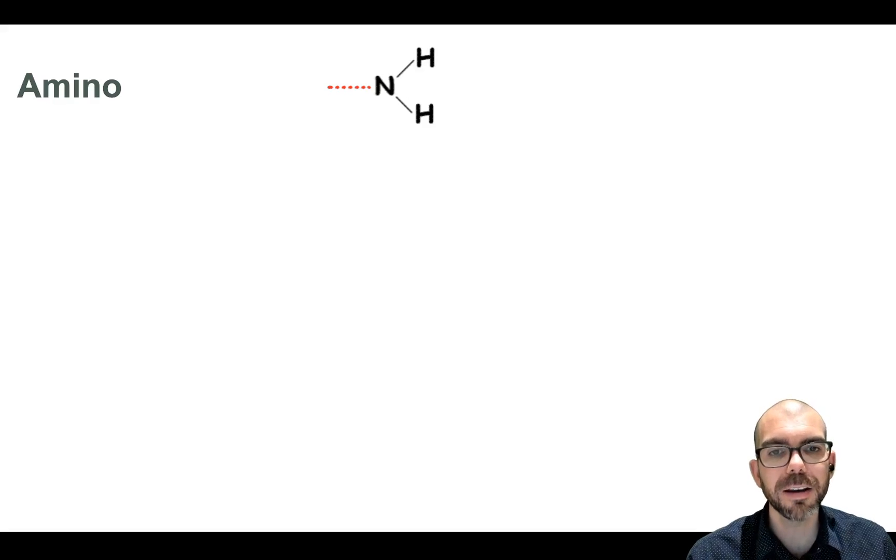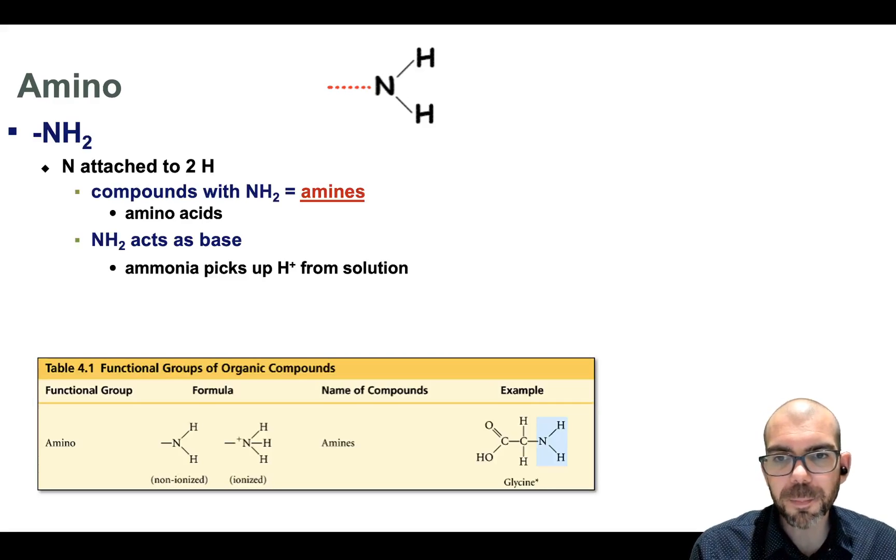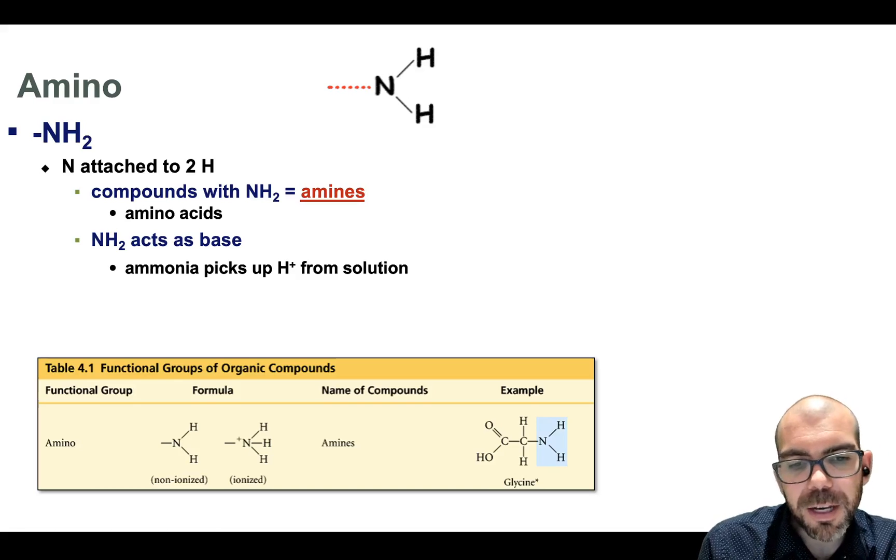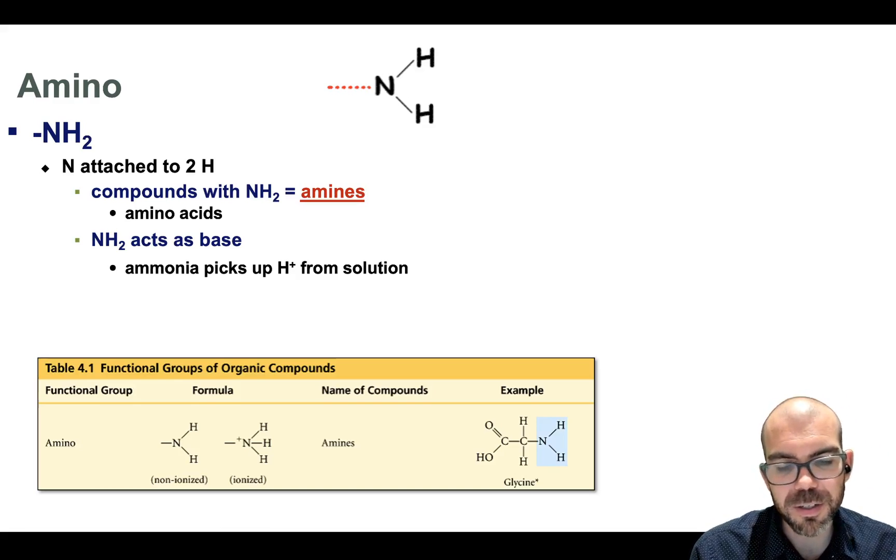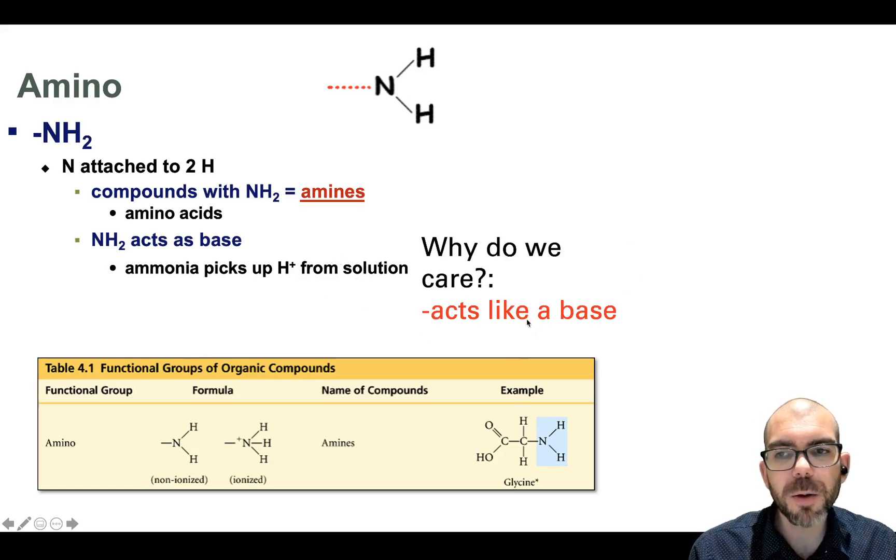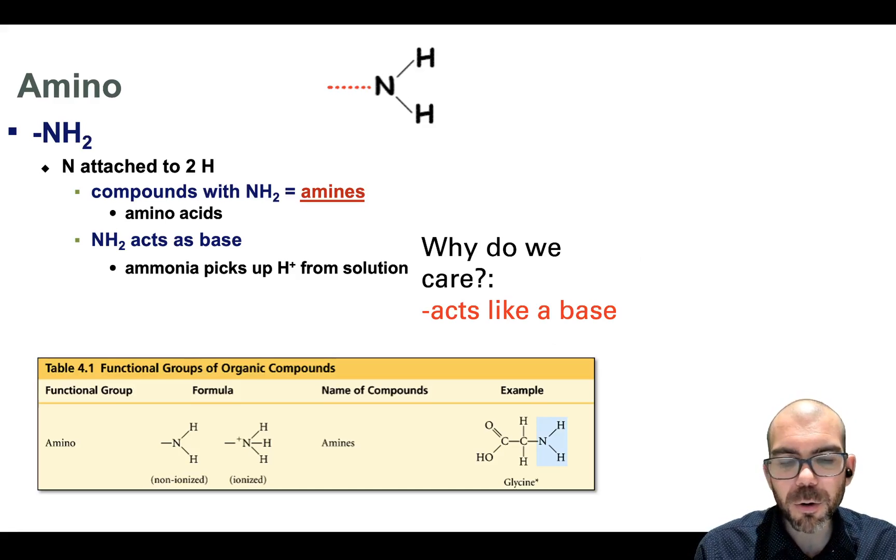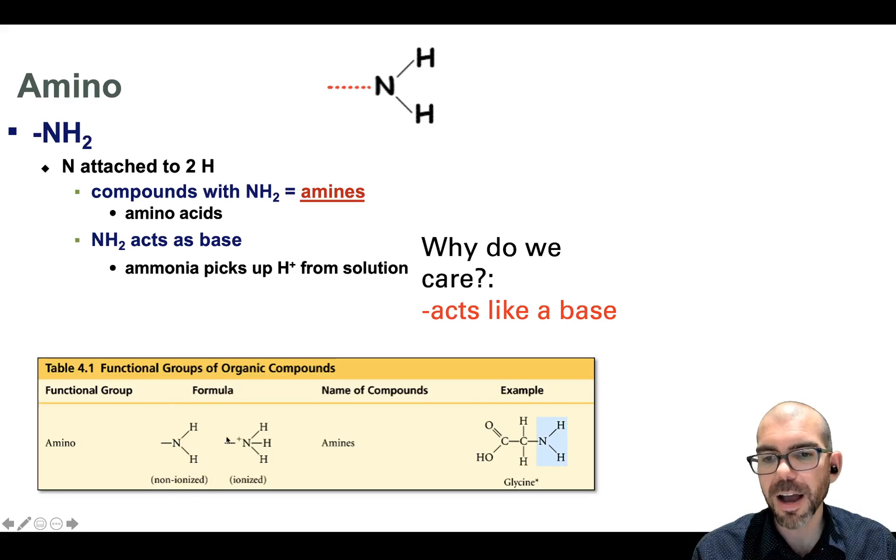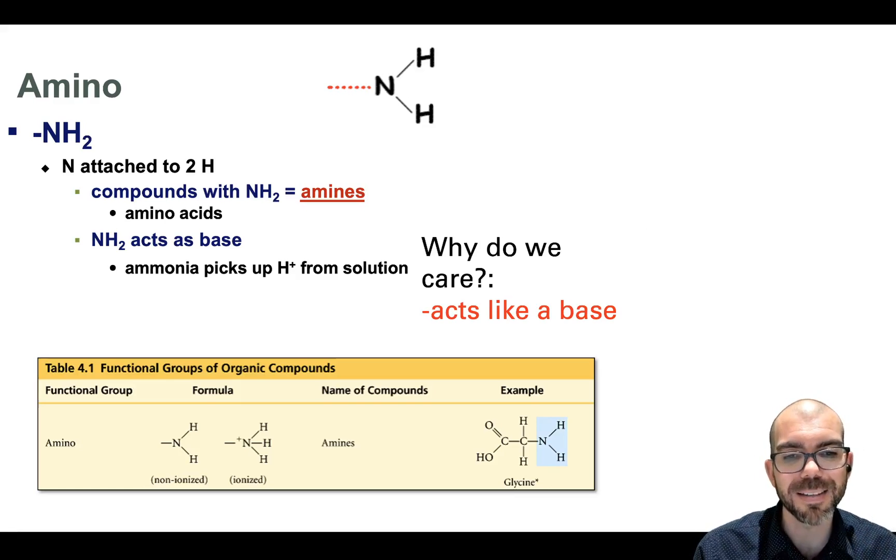Next up is amino, NHH. Aminos make up amino acids which make up proteins. This is very common in our organic chemistry. An amino is just that N bound to two H's. It can pick up H pluses from solution, and this is why we say that aminos act as a base. If I add an amino group to a molecule, it's able to attach another hydrogen. It's able to go from this non-ionized form with two H's to an ionized form with three. So if I'm accepting protons, accepting hydrogens, I am basic.